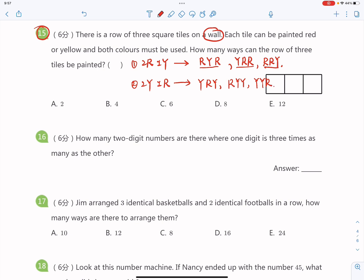So if you add them together, you'll find you got six different ways to do that. So the answer is option C.